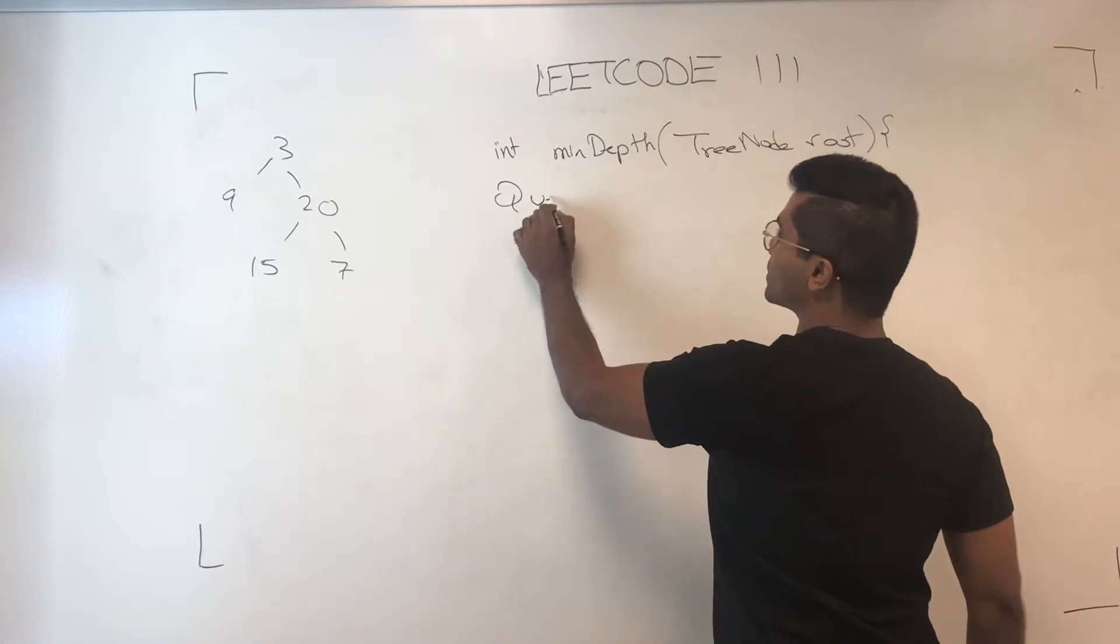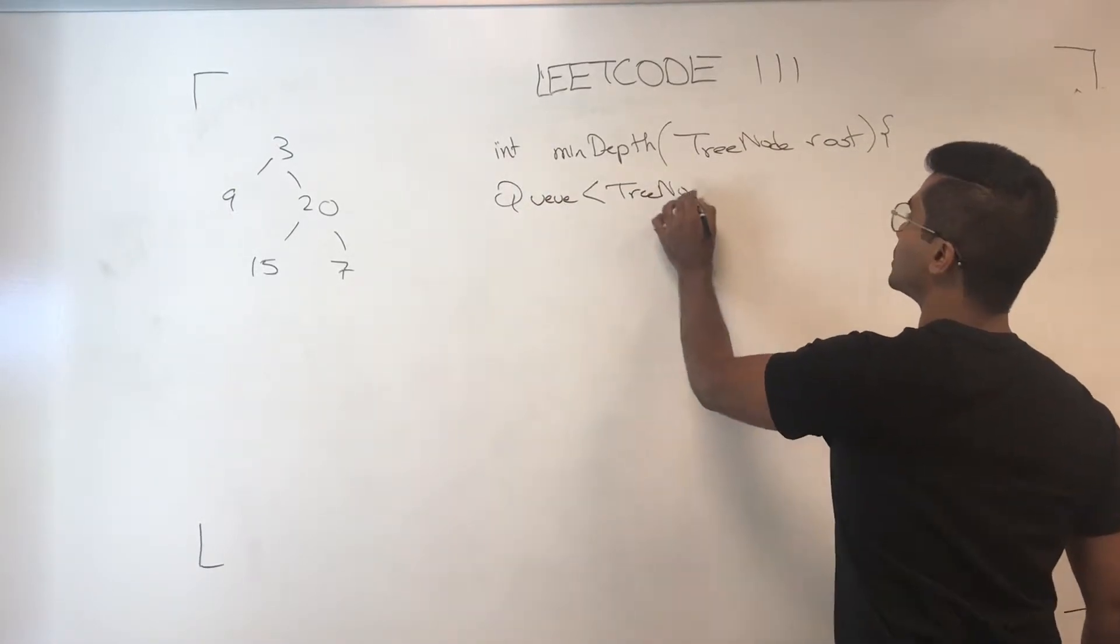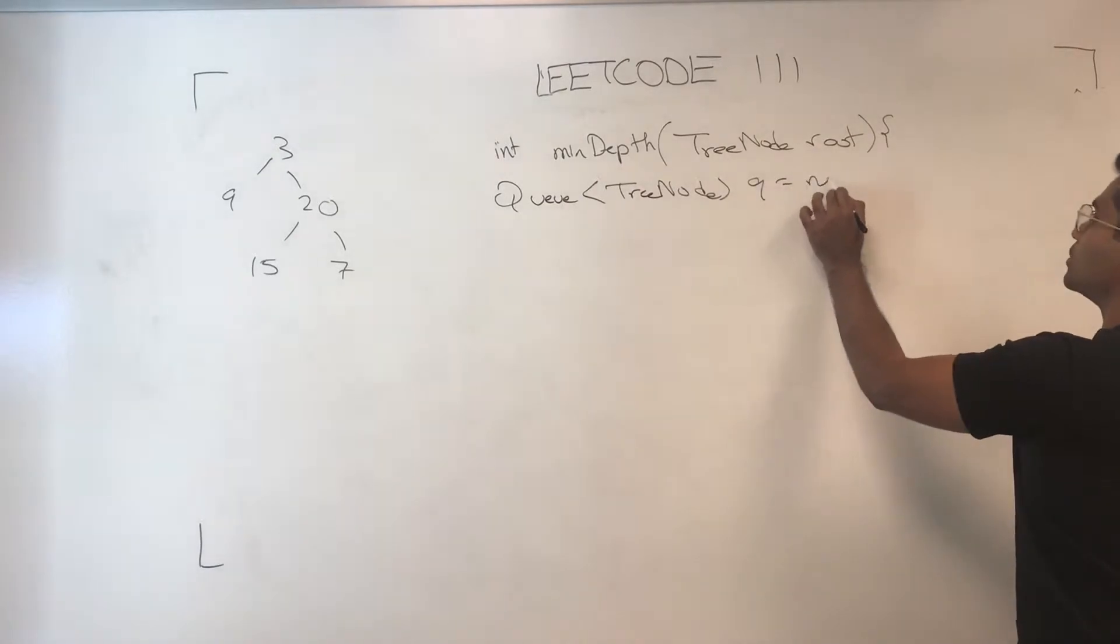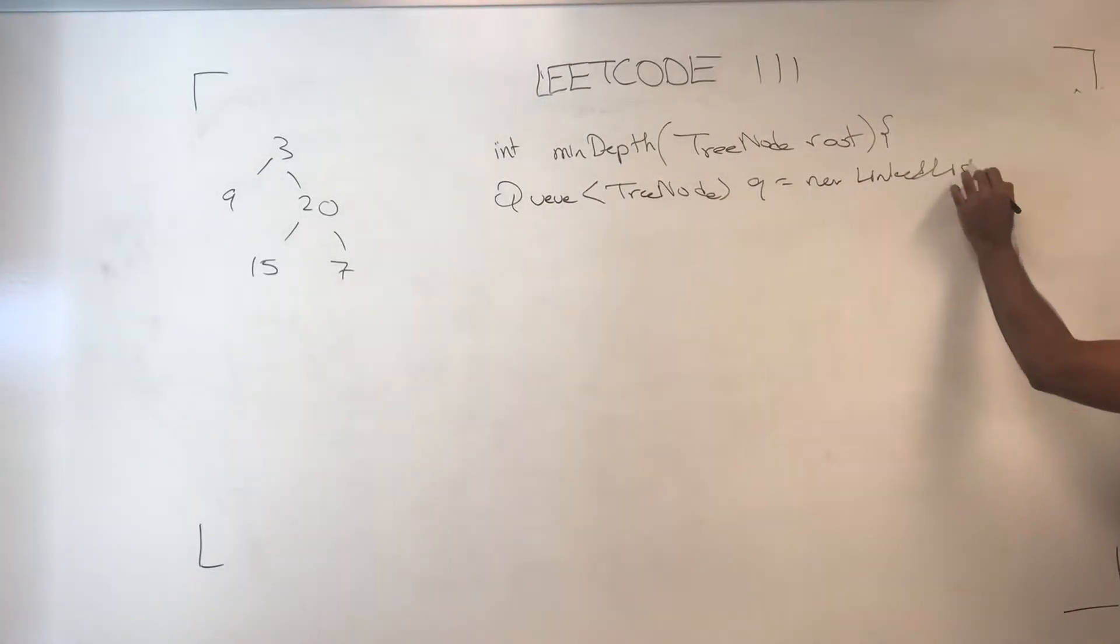Okay, so BFS is going to use a queue. Let's have tree nodes Q equals new linked list.